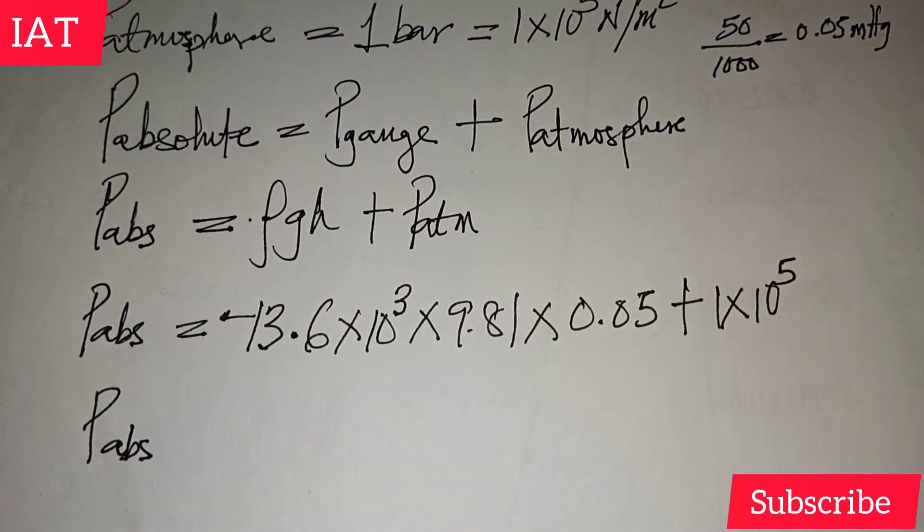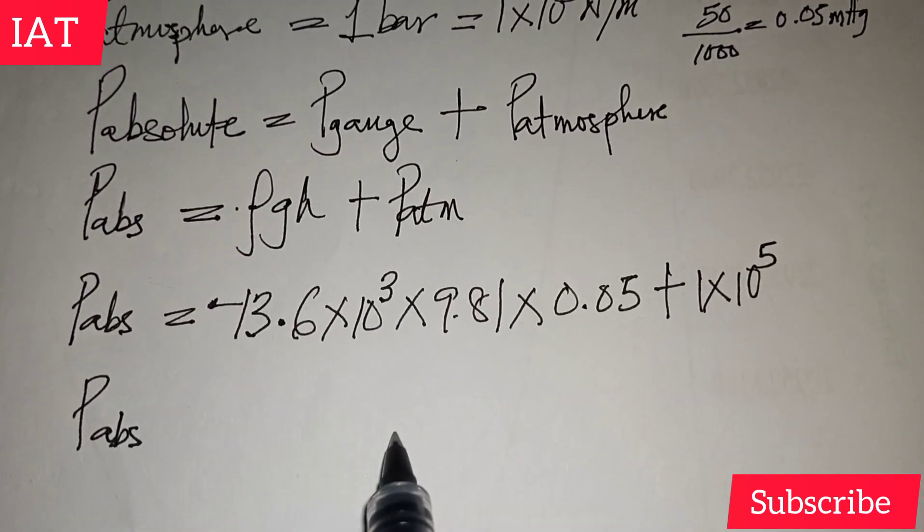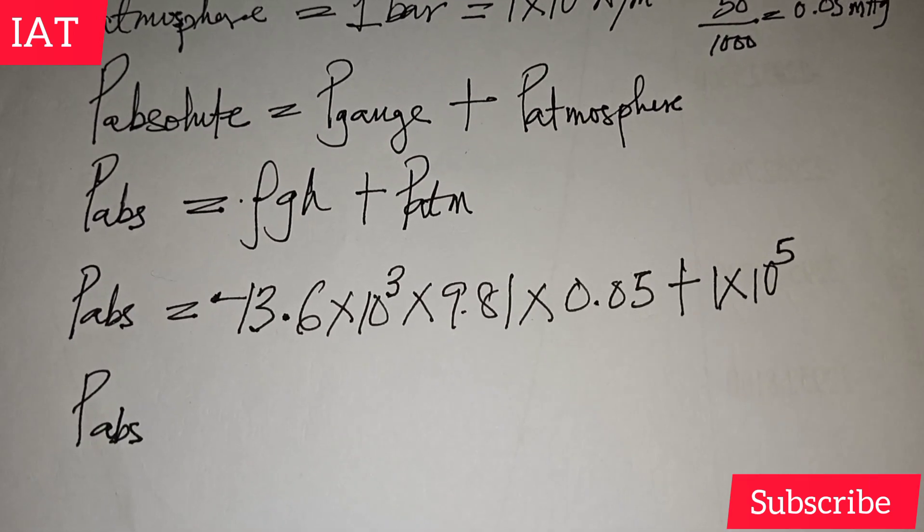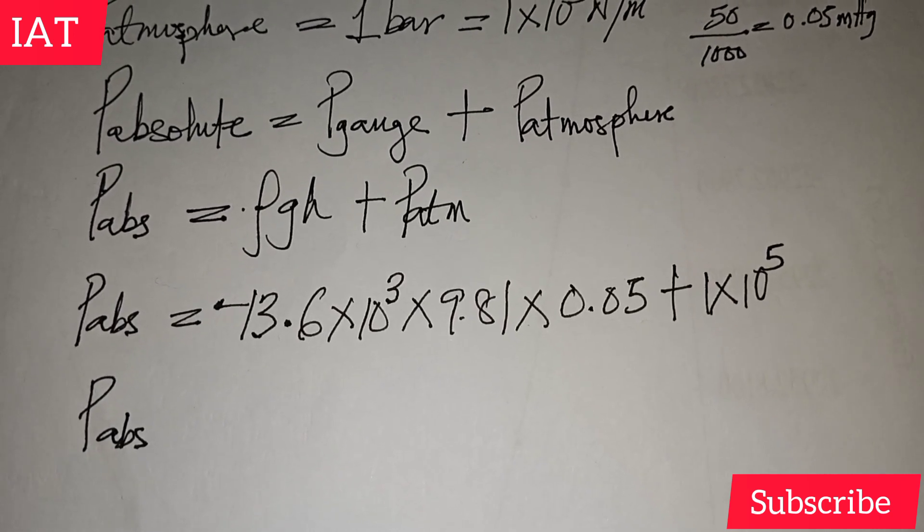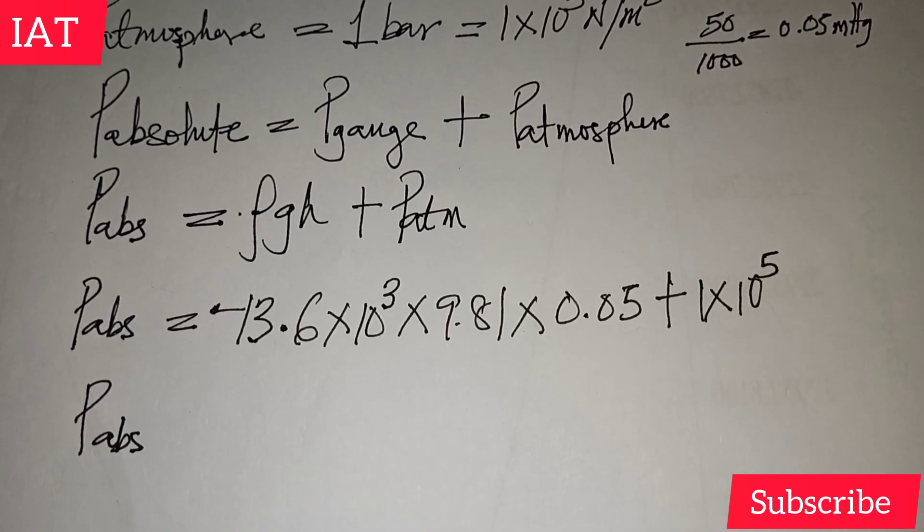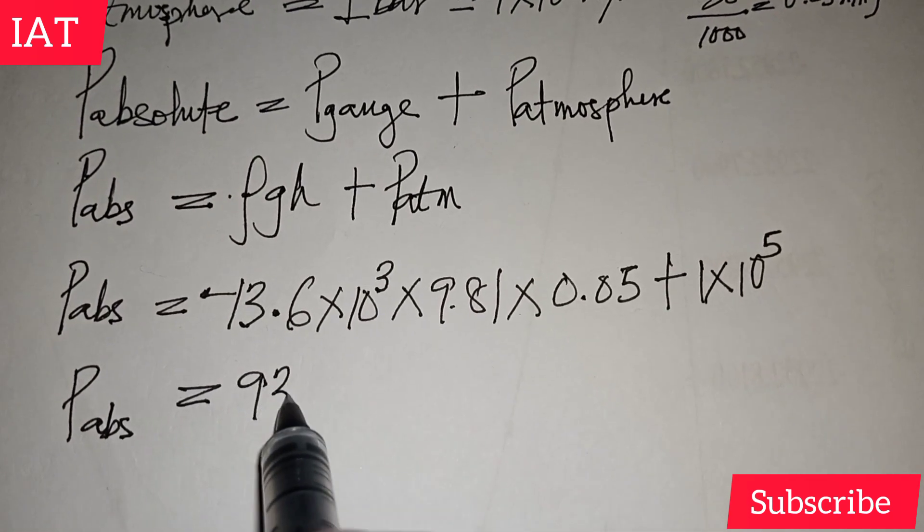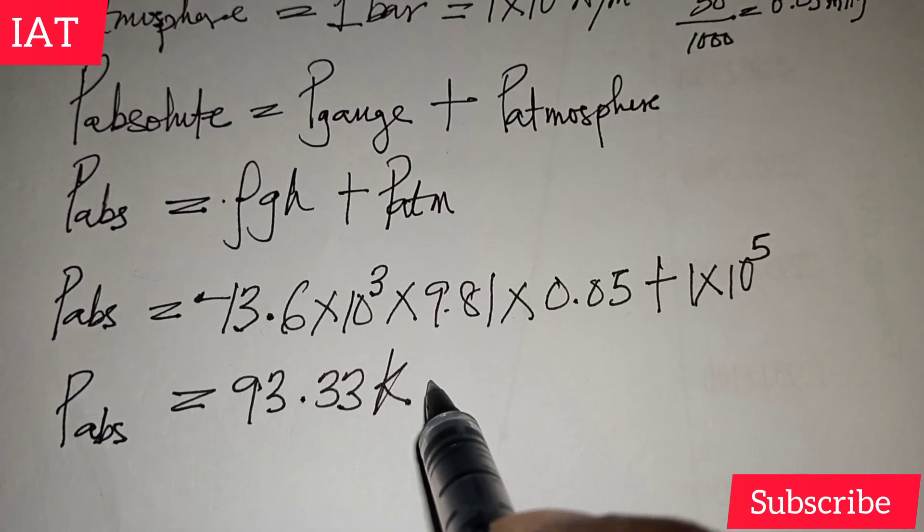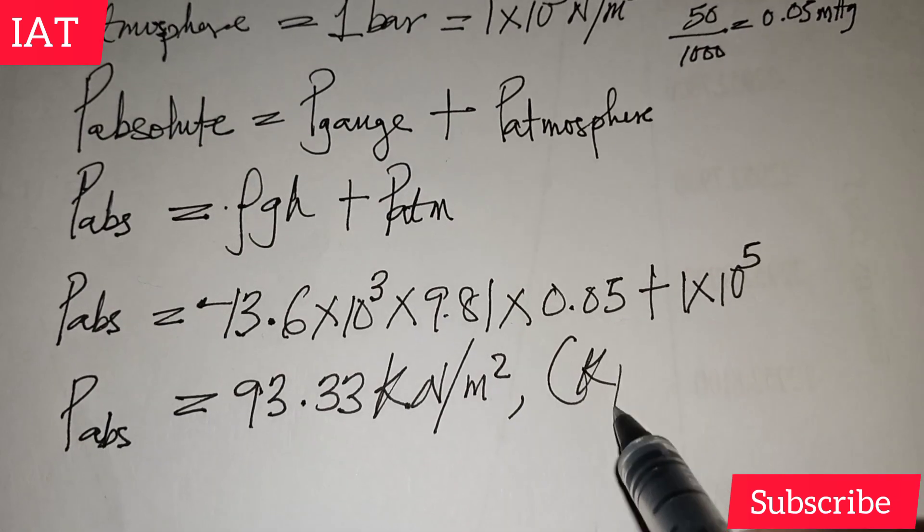So we have 13.6 × 10^3 (we can replace 10^3 with kilo) times 9.81 × 0.05 + 10^5. The result we have here is approximately 93.33 kilo pascal, or you can just put it as kPa.